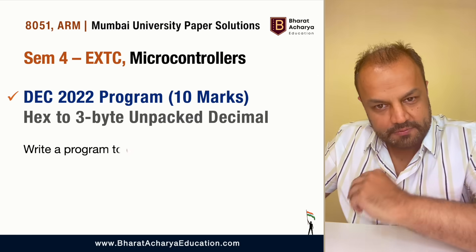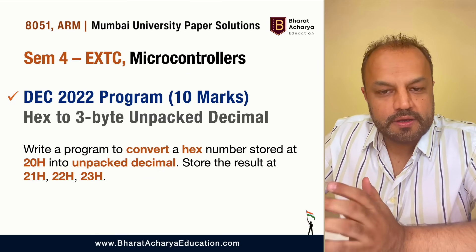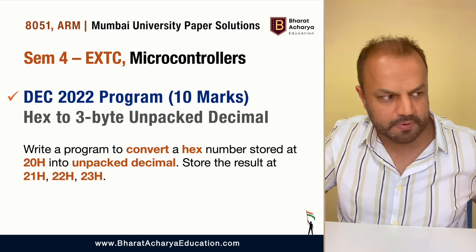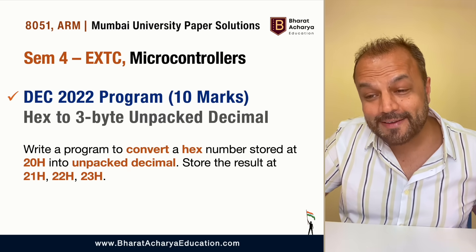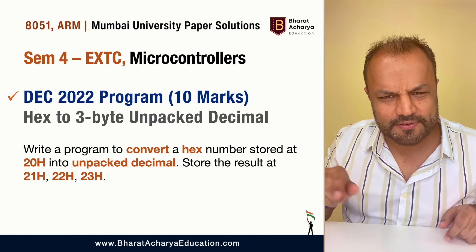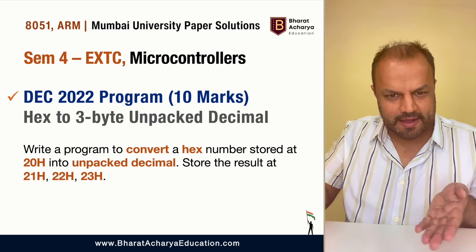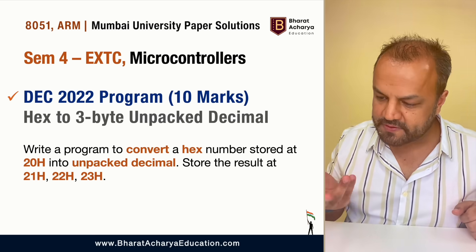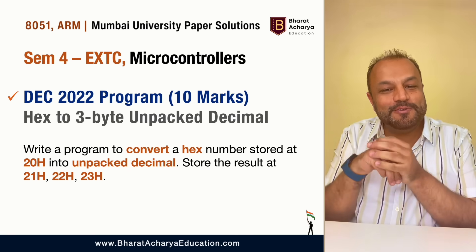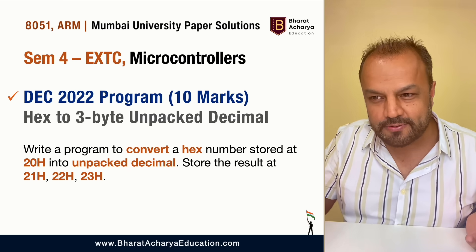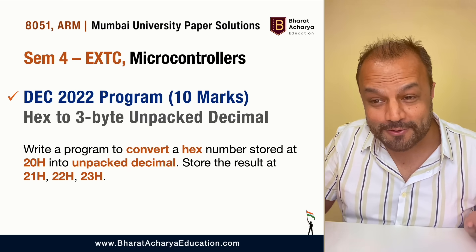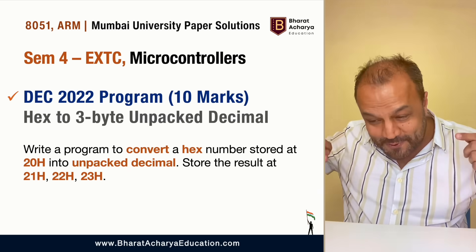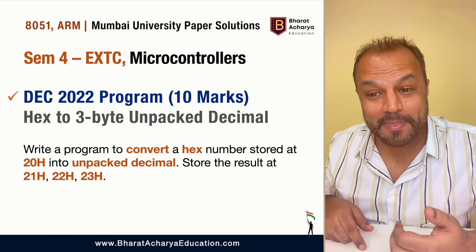So that should not happen to you. The four programs we're going to do — the first one is: convert a hex number to a 3-byte unpacked decimal number. This was asked in December 2022, just the latest paper a few months back, a 10-mark question. We had done a similar program last year converting hex to BCD. This is one step ahead — hex to unpacked BCD — and we've already done the program to convert packed BCD to unpacked BCD. So this is just a combination of two programs. Ten to twelve instructions is all it takes to write this. If you know this program, you'll finish it in five minutes and get 10 marks.